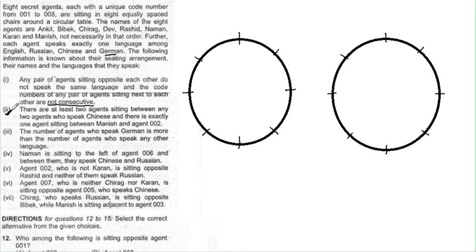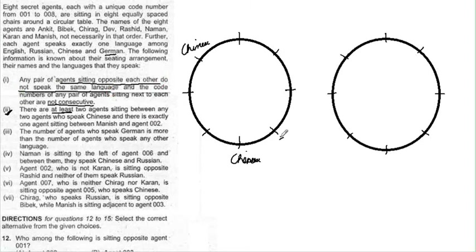There are at least two agents between any two Chinese-speaking agents. Combined with the rule that opposite agents don't speak the same language, Chinese speakers cannot be placed at opposite positions. Testing various positions, only one valid placement remains — and the symmetrical case is just a rotation of that, so we don't consider it separately.